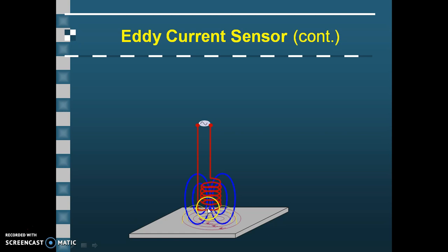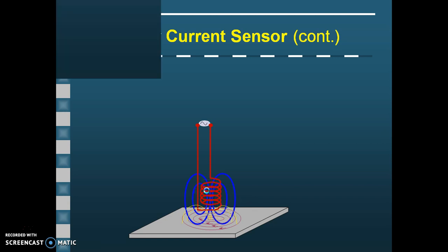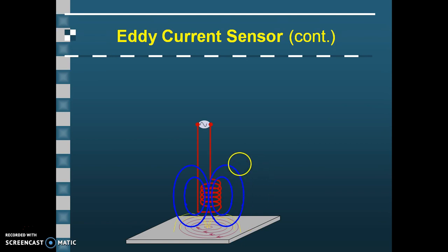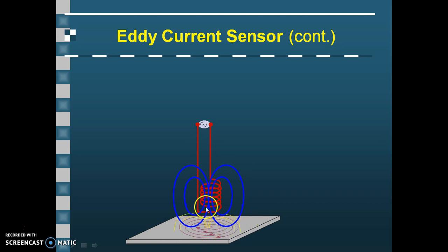These two fields will superimpose, and from Lenz's law it is clear that they will oppose each other. The superimposition of the two opposing electromagnetic fields will change the impedance of the coil. AC current is applied, the coil produces one electromagnetic field, that induces eddy current in the nearby metallic sheet or conductive plate, which produces another electromagnetic field that opposes the probe's field. Due to the superimposition of the two opposing fields, the impedance of the coil will increase.